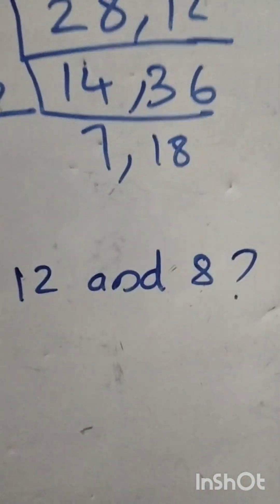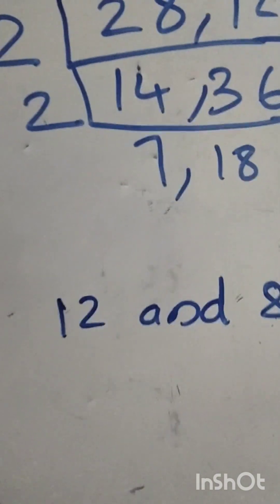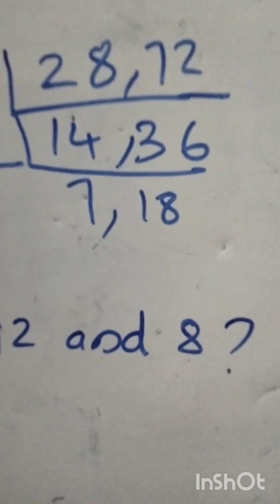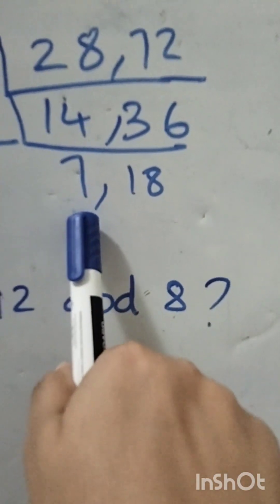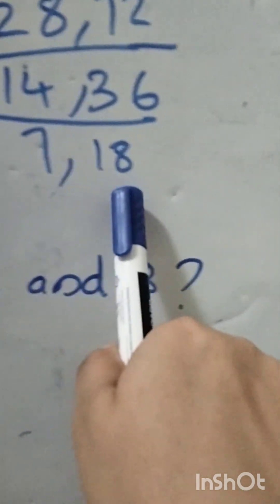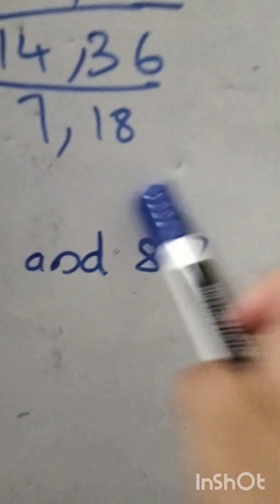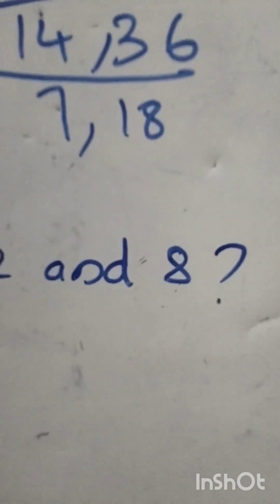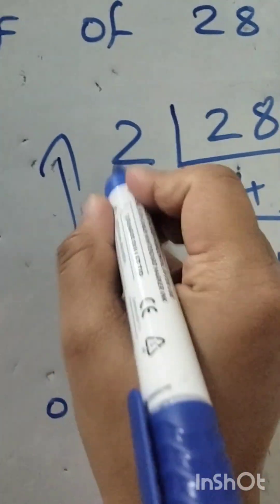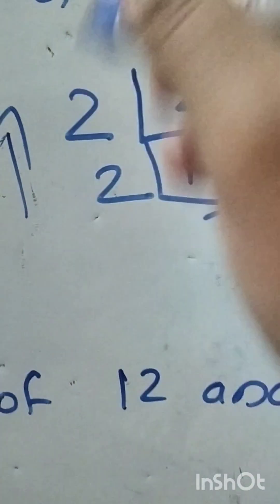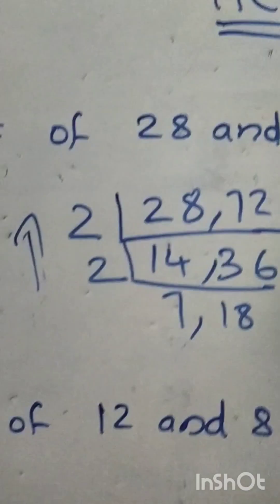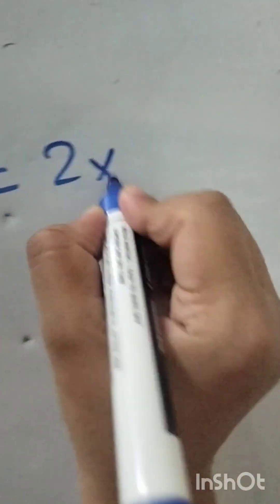While finding the HCF, we should stop here because we cannot completely divide both numbers by the same prime number. We can divide 7 by 7, but 18 cannot be divided by 7. So we stop there and take the product of the prime numbers in the division lines, that is 2 and 2. Therefore, HCF of 28 and 72 equals 2 into 2, which is 4.